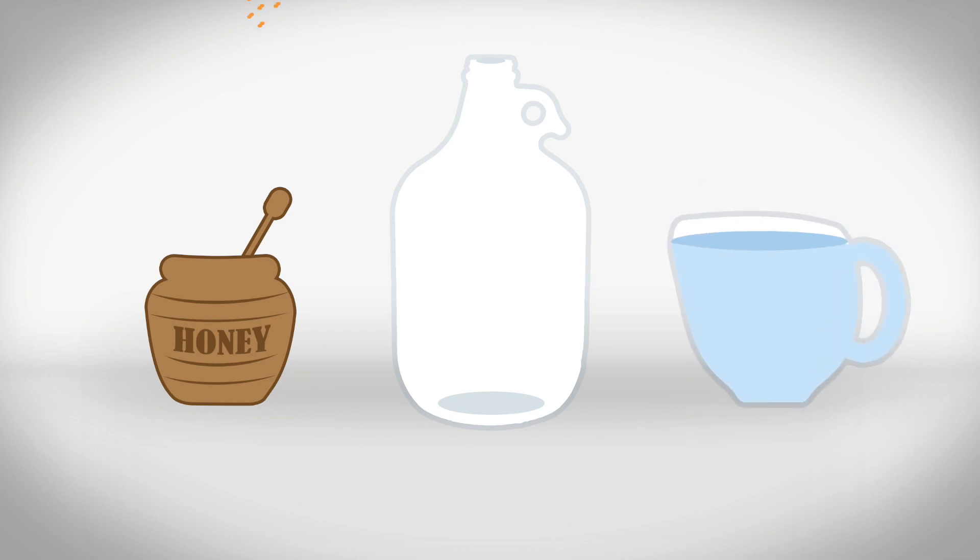Modern practices are far more refined. A traditional mead can be made in a gallon glass container with 3 pounds of honey, some spring water, and champagne yeast.